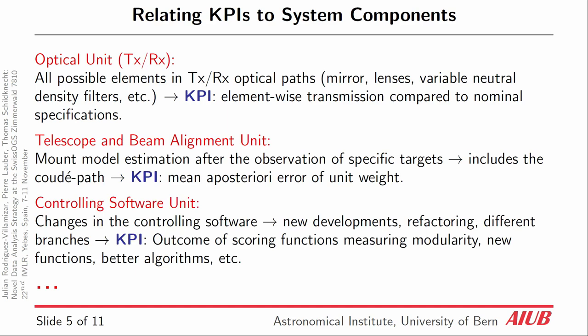For the control software unit, we need to see that our software is improving because there are new developments — we have to refactor or we are using different branches. We have outcome of scoring functions that assess how much our software is changing with respect to time and if the algorithms are improving or not with respect to what we are doing.